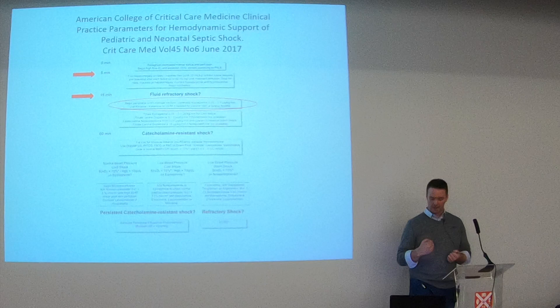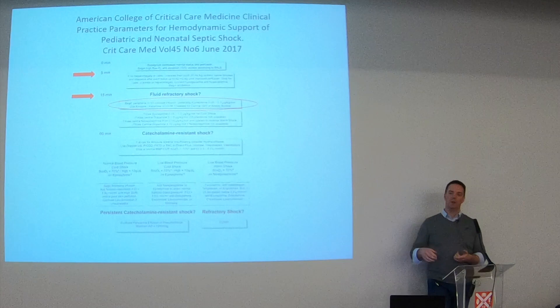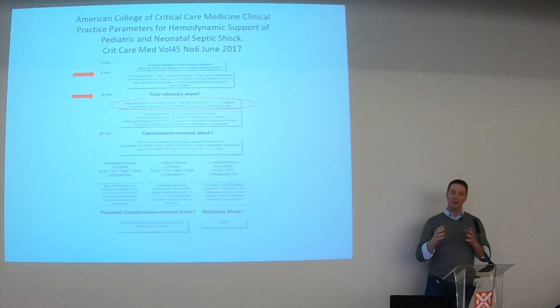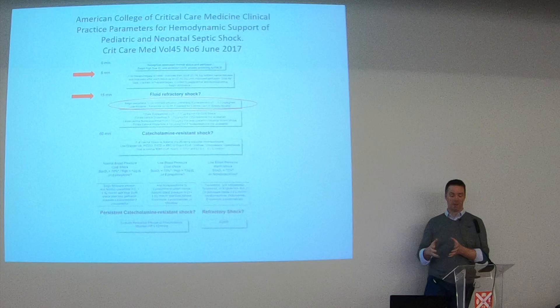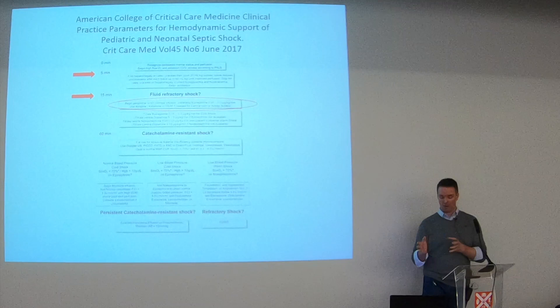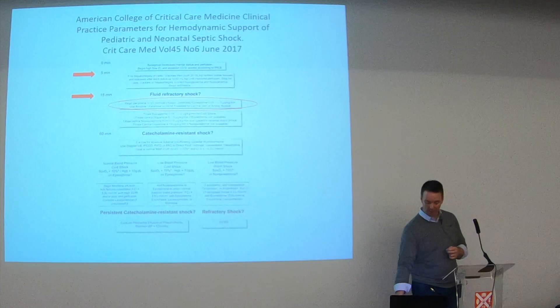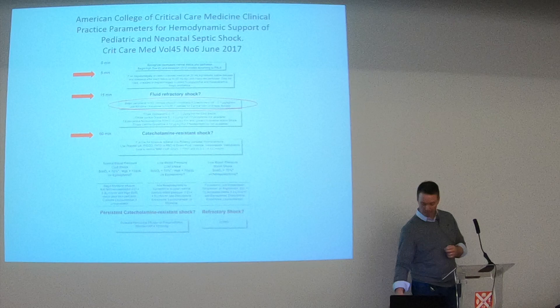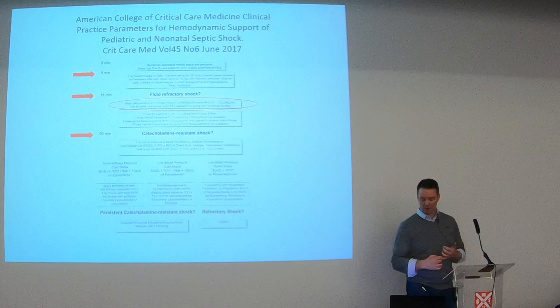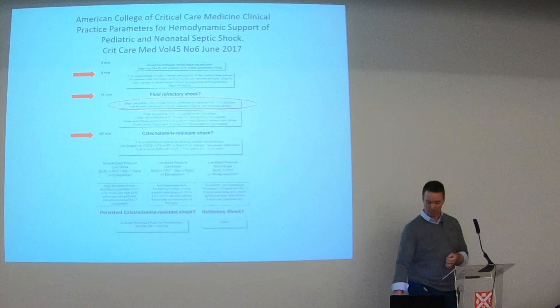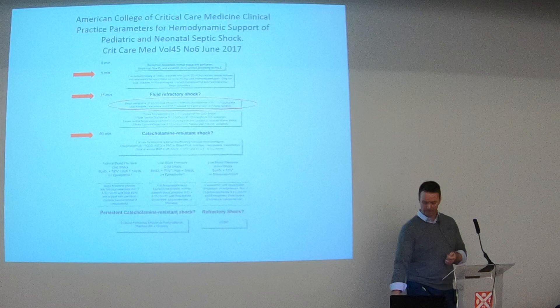The guideline says: begin peripheral IV or intraosseous inotrope infusion, preferably epinephrine, at 0.05 to 0.3 micrograms per kilo per minute. Within 15 minutes of your septic baby arriving in hospital you should be thinking about administering inotropes. In real world practice it'll be slightly longer, but it gives you an idea of how quickly you should be responding. You're not going to get the baby intubated and a central line in within that timeframe. At 60 minutes you're into catecholamine-resistant shock, which is really where the ICU team gets fully involved.